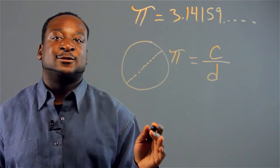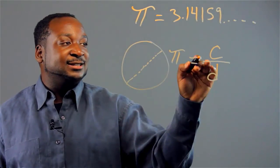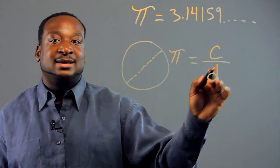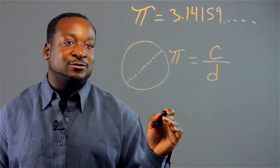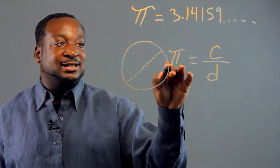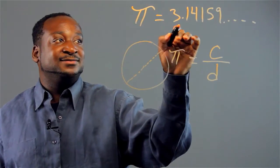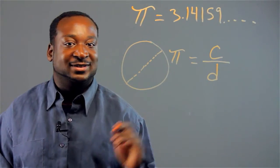So if you take any circle and you take the circumference and you divide it by the diameter, no matter which circle you use, you're always going to get pi, this value, which goes on and on to infinity.